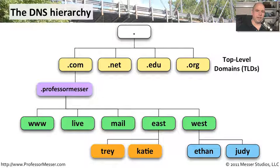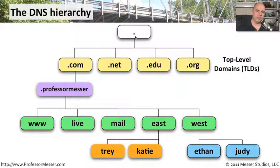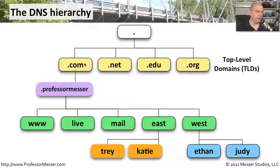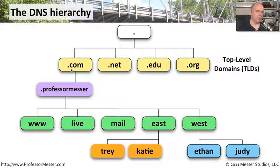If we were to put the internet in a hierarchy in graphical form, at the very top is your root level domain, represented by a period. When communicating to www.professormesser.com, the .com is what we call a top level domain, and there are many different top level domains. The .com is for commercial enterprises, .net, .edu for education, .org for organizations, .mil for military, and so on. All of those top level domains have their own set of DNS servers that we would need to reference.